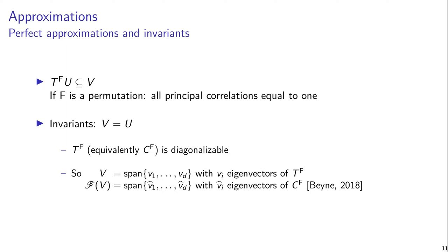One interesting case here is when V is equal to U — that case is what I'll call invariant. This includes, among other things, invariant subspaces and nonlinear invariants. One interesting thing to note here is that if T superscript F is diagonalizable, or equivalently the correlation matrix is diagonalizable, which is normally the case,